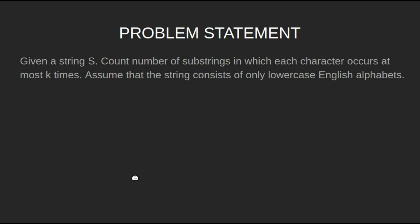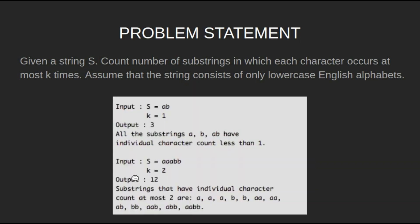Assume that the string consists of only lowercase English alphabets. For example, for input string 'ab' with k equal to 1, output is 3, as all the substrings — a, b, and ab — have the individual character count less than or equal to 1.